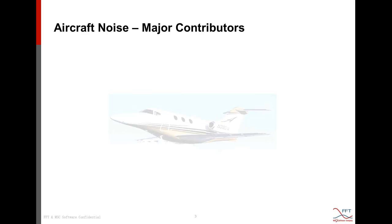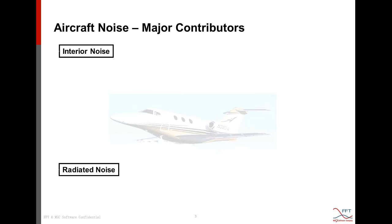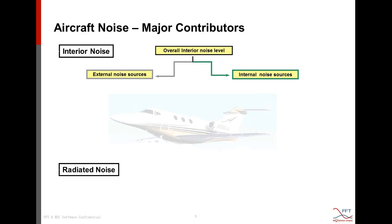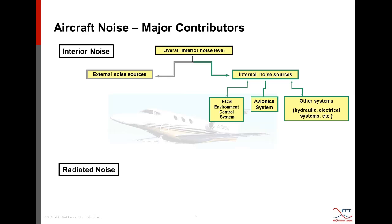First, a review of all the aircraft noise contributors on which FFT has worked with Actran. We can divide all contributions into interior noise and exterior noise, or radiated noise. The overall interior noise level is composed of many different sources in the aircraft — some located inside the aircraft itself, and some generated by devices outside the cabin. For sources inside the aircraft, we have noise from the environmental control system, avionics electronic systems, or hydraulic systems.